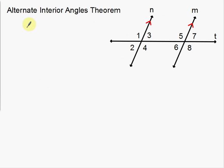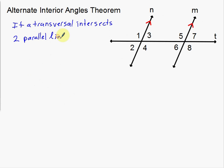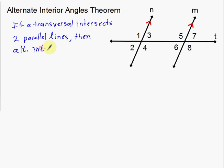If a transversal intersects two parallel lines, then alternate interior angles are congruent. Notice angle 4 is kind of a big angle, and the alternate interior angle over here — angle 5 — is also kind of a big angle. Angle 4 and angle 5 are going to be the same; they're going to be congruent. So alternate interior angles are congruent.